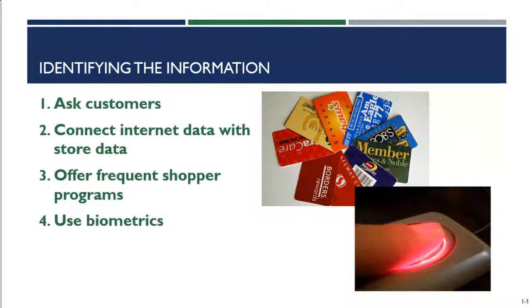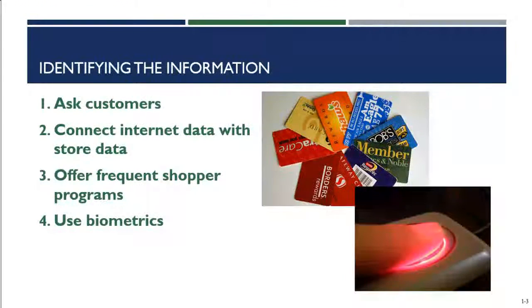A newer method of collecting data to identify customers is using biometrics. Biometrics are human characteristics such as handprints, fingerprints, irises, or your voice — vocal inflections can be used to identify you. Using biometric data ensures we're collecting data about a specific customer. In some stores, customers can register their credit card with a fingerprint, and when they check out, they simply scan their fingerprint, which is automatically connected to their credit card data and completes the purchase. It also helps retailers verify that the person returning a product is the person who bought it.